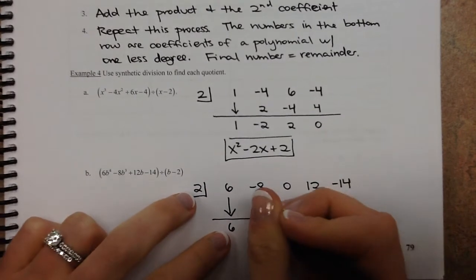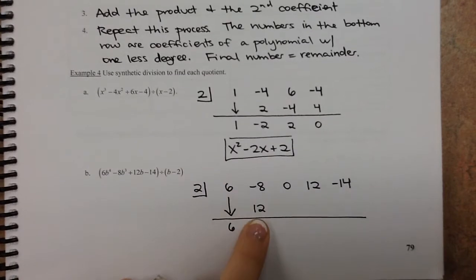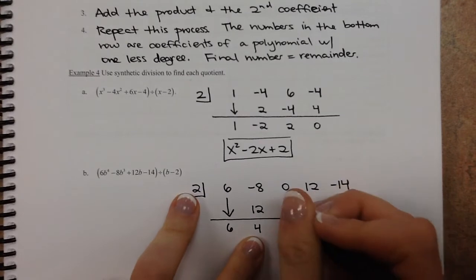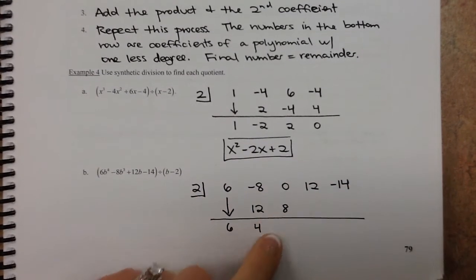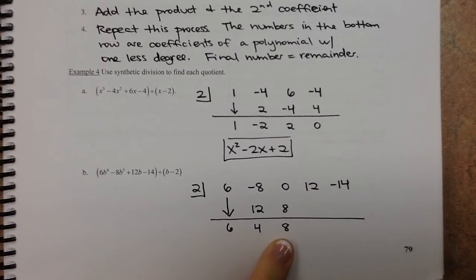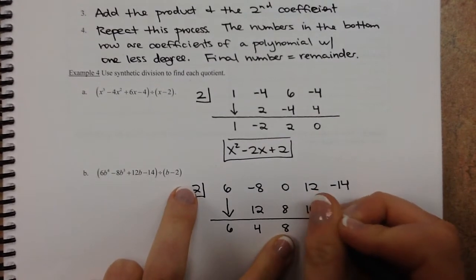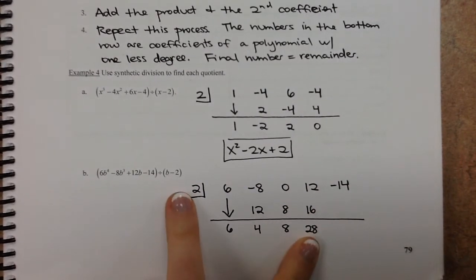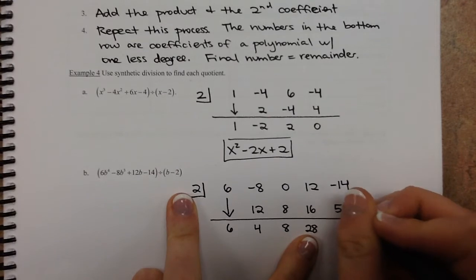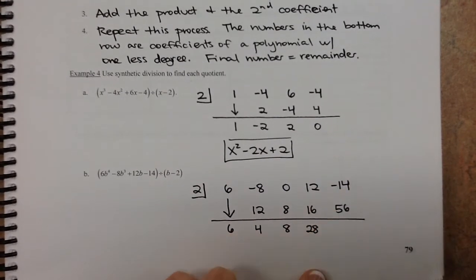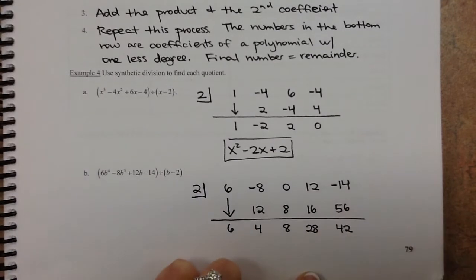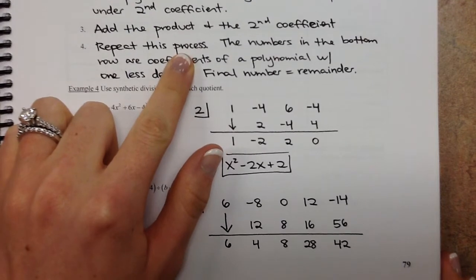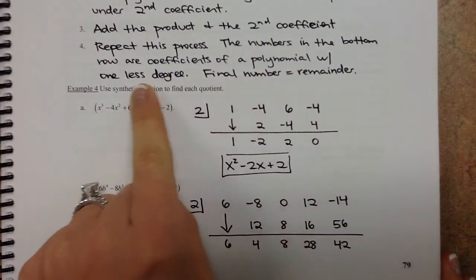So 6 times 2, we get 12. Add these two numbers together, we get 4. 4 times 2, we get 8. Add these two numbers together, we get 8. 8 times 2 is 16. Add these two numbers, we get 28. And 28 times 2 is 56. Add these two numbers together, and we get 42. So I basically just ran us all the way through the process here.